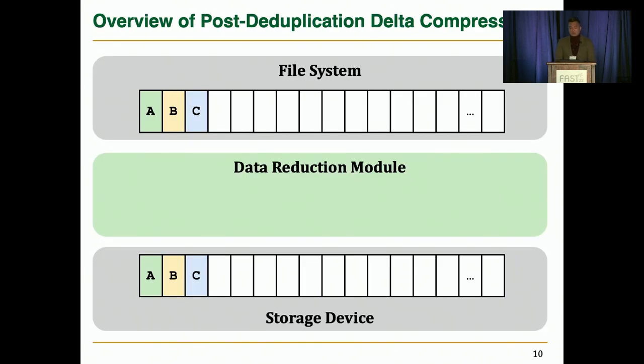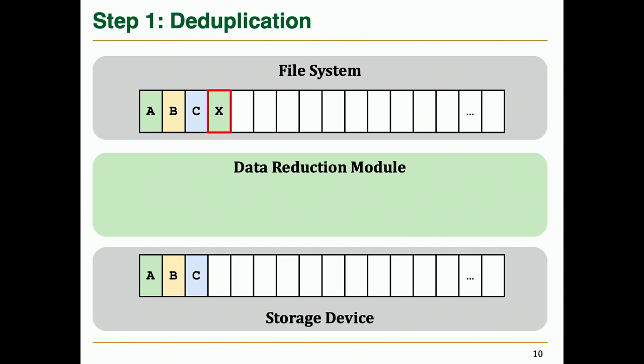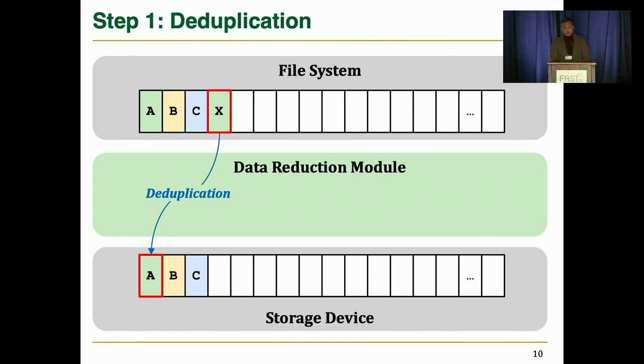Let me quickly explain how post-deduplication data compression handles incoming write requests. Suppose that the system has an intermediate layer between the file system and the storage device, which we call a data reduction module. For an incoming write, the data reduction module first tries deduplication. If a write request has the same contents as a previously stored block, it skips writing the requested data, but just maps the target logical block address to the identical block in order to serve future reads to the deduplicated block.